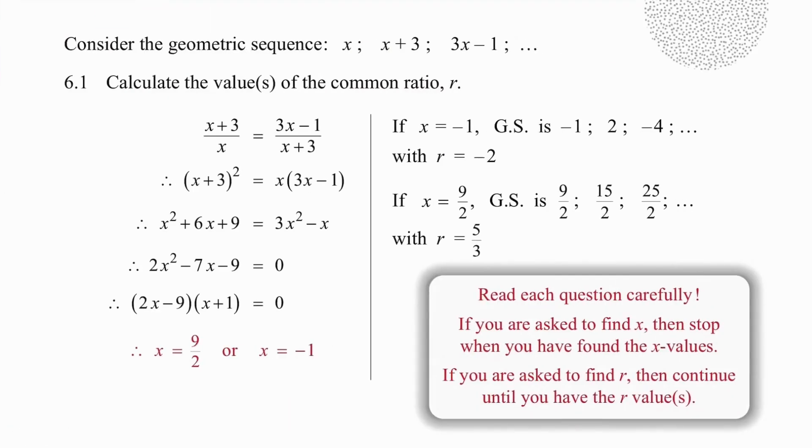We have three terms given, and we are going to go back to the basics. If we take the second term and divide by the first term, we get the common ratio. If we repeat that process but take the third term and the second term and divide those terms, we get the common ratio again. So we can set up an equation and solve that equation. We get a trinomial, we factorize or use the quadratic formula, and we get two values of x.